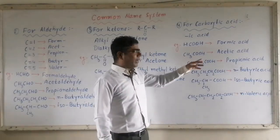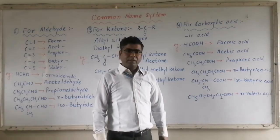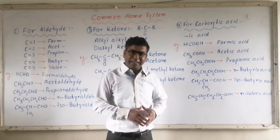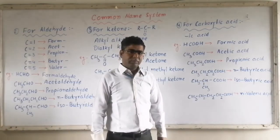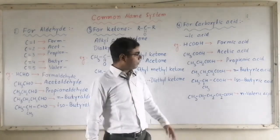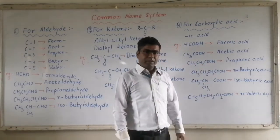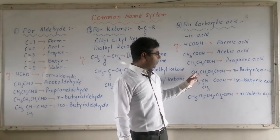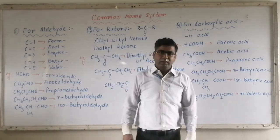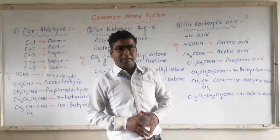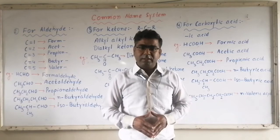Similarly, CH3COOH — for two carbon atoms, we use the term 'acet.' Add 'ic acid' with 'acet' and it will be 'acetic acid.' The third member, CH3CH2COOH, will be 'propionic acid.' Then the next member, CH3CH2CH2COOH — this acid is present in butter; the source is butter — so the compound is 'butyric acid.'